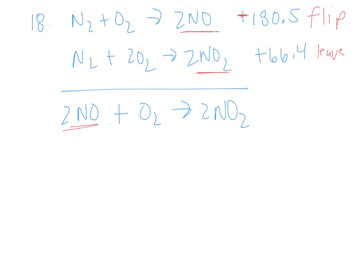So again, with the negative 180.5 and the positive 66.4, when I sum that, I get negative 114.1 kilojoules per mole. So Hess's law, when it's just two equations and you're given the desired equation, it's pretty straightforward.